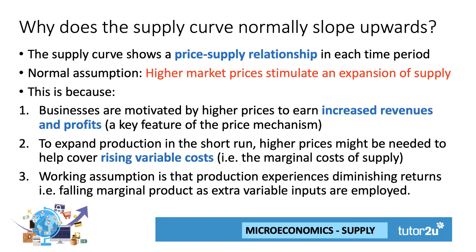The second reason is that in order to expand production, particularly in the short term, you have to add more inputs into production processes. It may well be the case that your variable cost of production — your marginal cost of extra units — goes up. If that's the case, you need higher prices to help cover those increasing variable costs. There's also an implicit assumption in a lot of economic theory that production experiences diminishing returns as you add more land and labour. Marginal productivity goes down, diminishing returns kick in, and as a result the marginal cost of supply goes up, causing the supply curve to slope upwards.